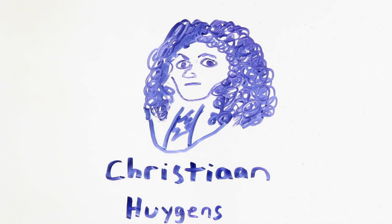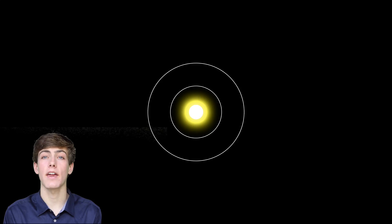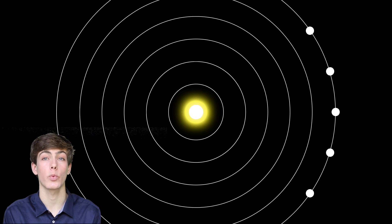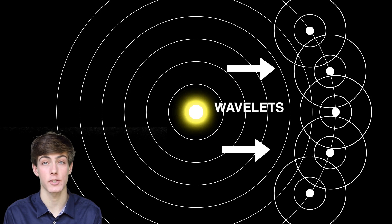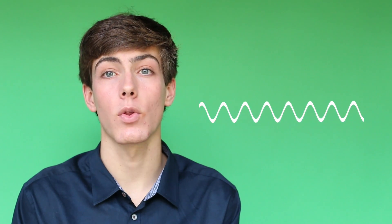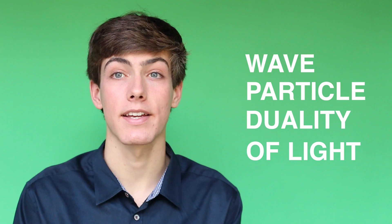In 1690, Dutch mathematician Christian Huygens proposed that every point on a wavefront may be considered the source of secondary wavelets that spread out in all directions, with a speed equal to the speed of propagation of the wave. So while we think of individual units of light or photons as particles, it's sometimes useful to think of light as behaving as a wave.